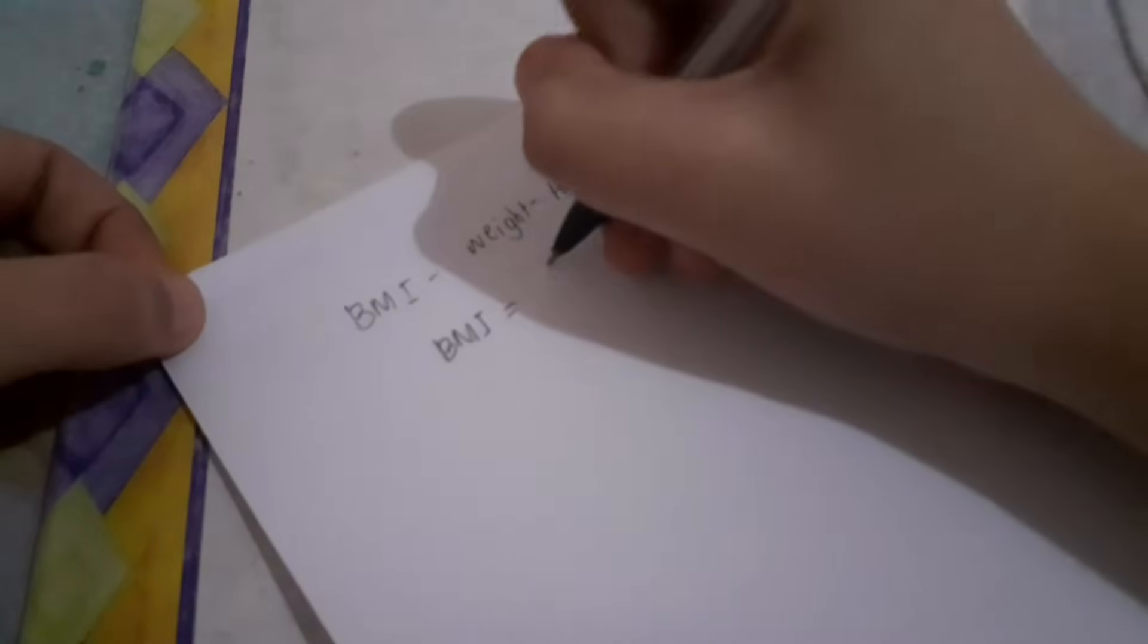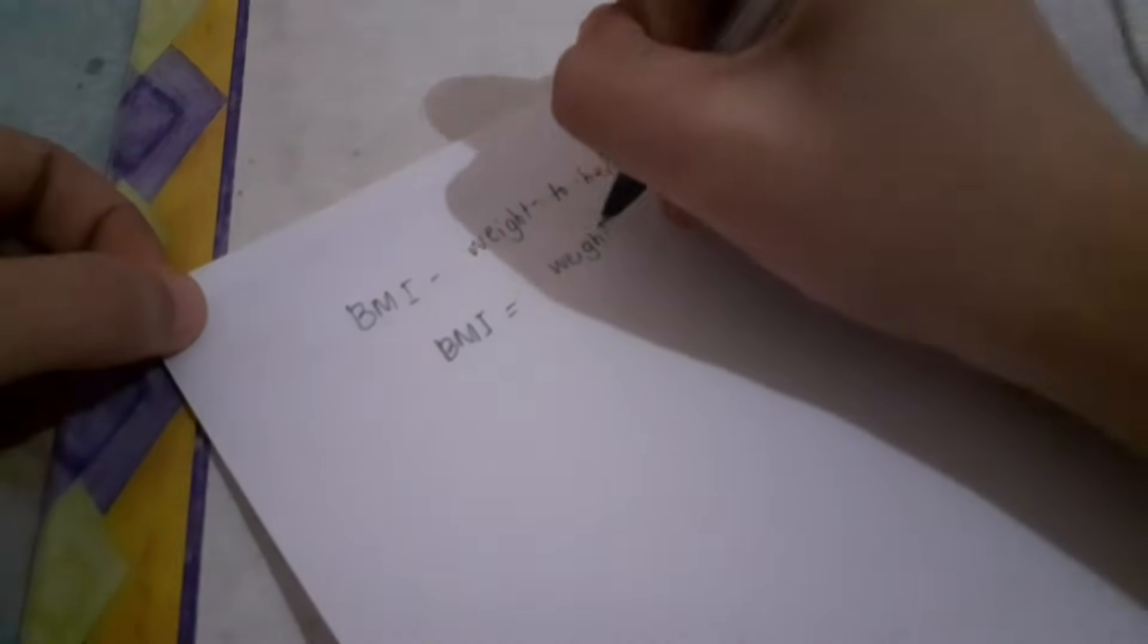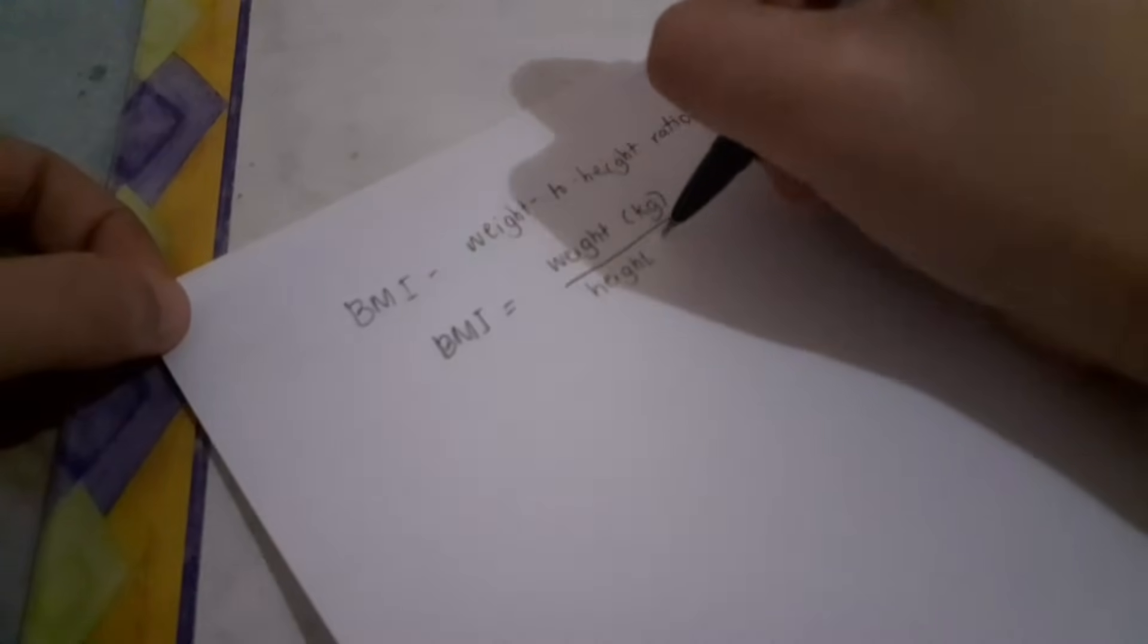So the formula of BMI is weight, the unit is kilograms, over height in meters squared. Don't forget the squared.